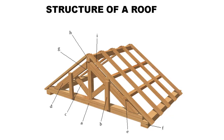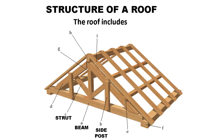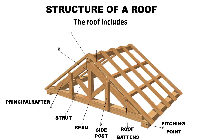Structure of a roof. The roof includes: A. Beam, B. Side post, C. Strut, D. Principal rafter, E. Roof battens, F. Pitching point, G. King post, H. Ridge beam, I. Common rafter.